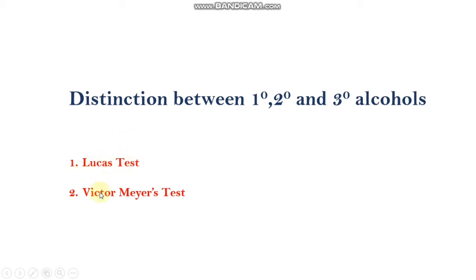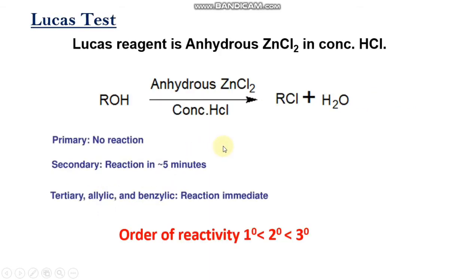The first test is the Lucas test, and the second is the Victor Meyer's test. In the Lucas test, alcohols are treated with the Lucas reagent. The Lucas reagent is anhydrous zinc chloride in concentrated HCl.